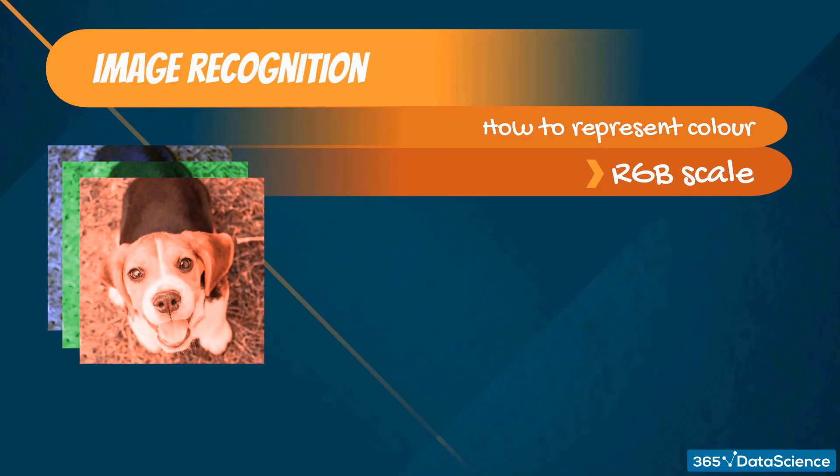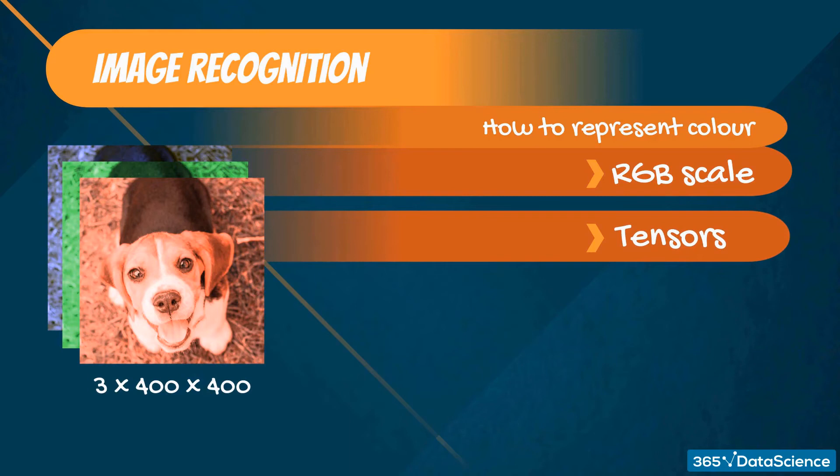So instead of a 400 by 400 matrix, we get a 3 by 400 by 400 tensor. This tensor contains three 400 by 400 matrices, one for each color: red, green, and blue. And that's how deep neural networks work with photos.